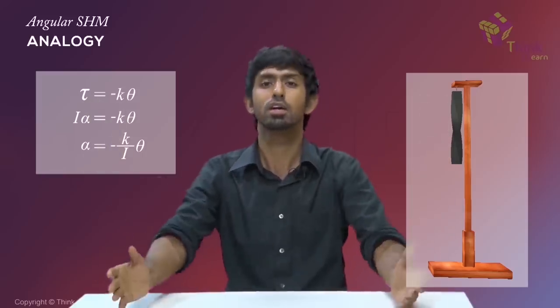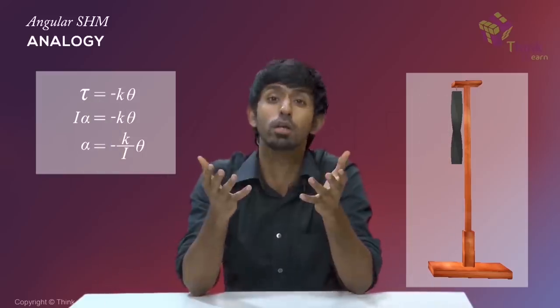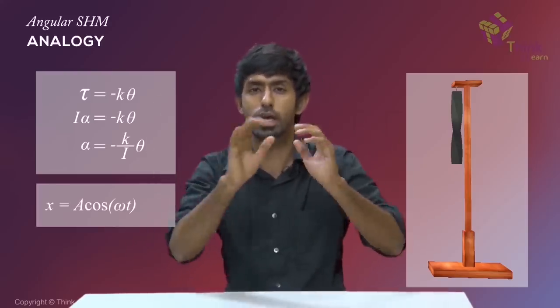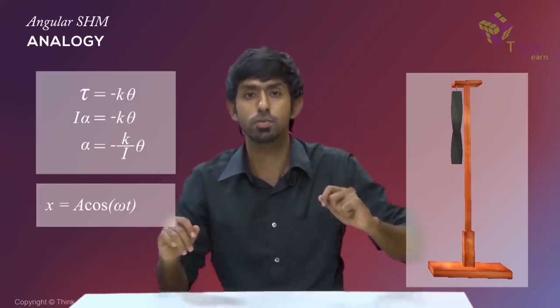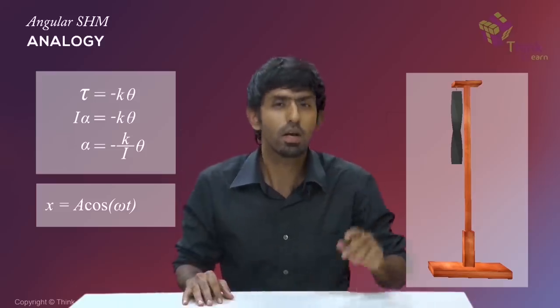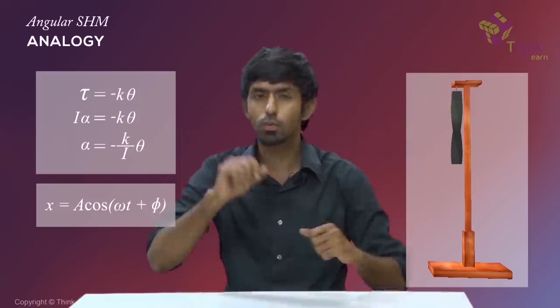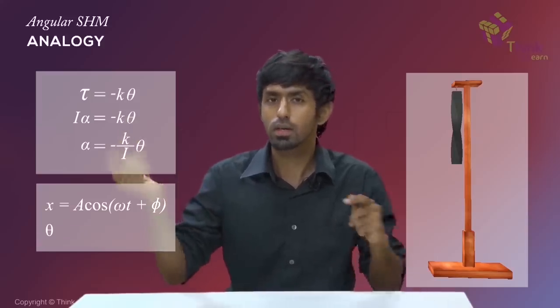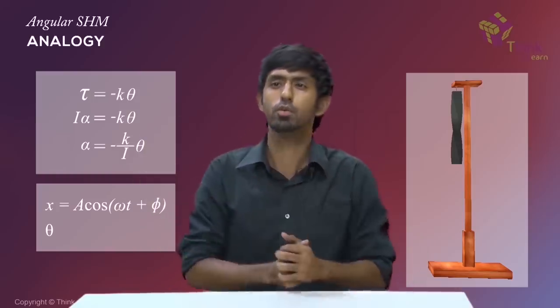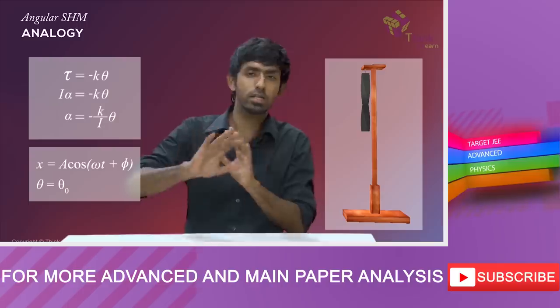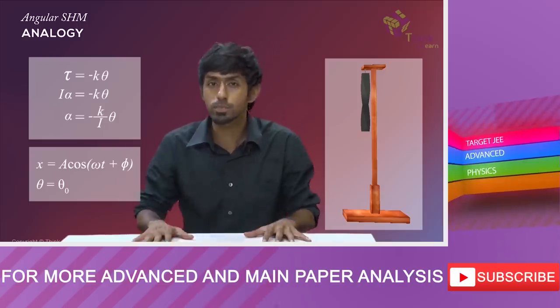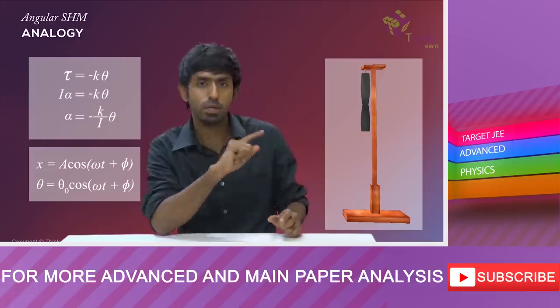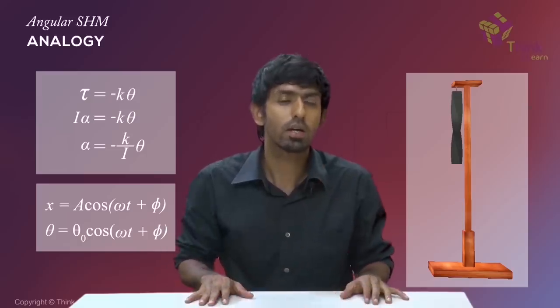This allows us to give an expression, a general expression, for this kind of angular simple harmonic motion. Just take a linear simple harmonic motion equation, because you spent a lot of time deriving that, and just replace alphabets now. Over there, you had X equals A cos omega t, as long as the body starts from the extreme position. Let's stick with that even over here, plus some phi for a general case. So you have that over here.